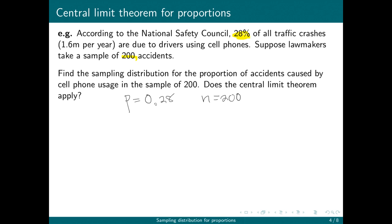Let's calculate the number of successes — in this case, crashes caused by a cell phone. That's 0.28 times 200, which is 56. That's more than 10. Then we calculate the number of failures: if we have 200 trials and 56 are caused by cell phones, then the number not caused by a cell phone is 144, because both numbers must add up to 200. So the central limit theorem applies.